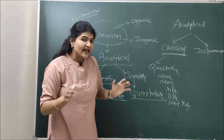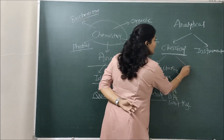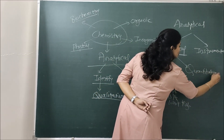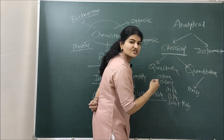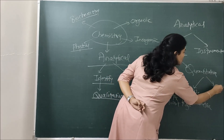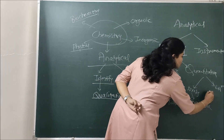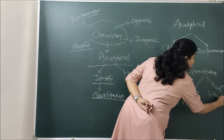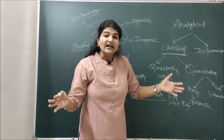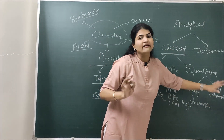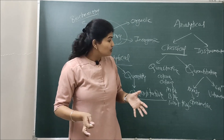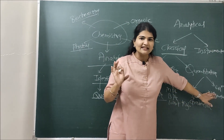Now if you want to carry out quantitative analysis under classical methods, then you have two options. For quantitative analysis under classical methods, if you want to measure the mass of a substance, you have to go with gravimetric analysis. And if you want to measure the volume of a sample, then you have to go with volumetric analysis. So basically, quantitative analysis under classical methods is divided into two types: gravimetric analysis and volumetric analysis. Volumetric analysis is nothing but titrations. So our topic of discussion today is volumetric methods of analysis, that is titration.